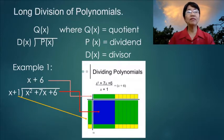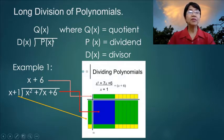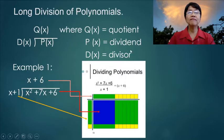Now we have long division of polynomials. This symbol, P of x, stands for our dividend. And this symbol, D of x, stands for our divisor. And Q of x stands for our quotient.